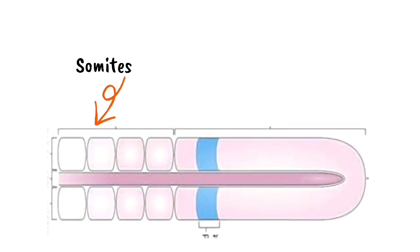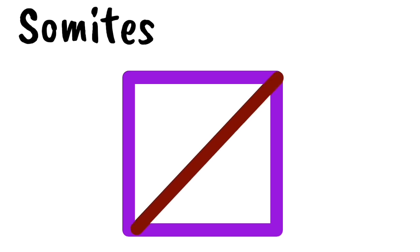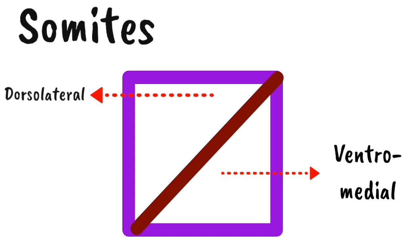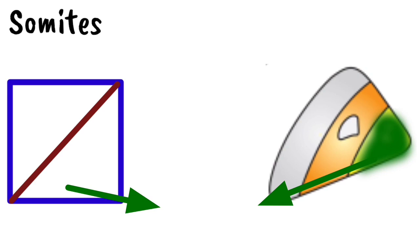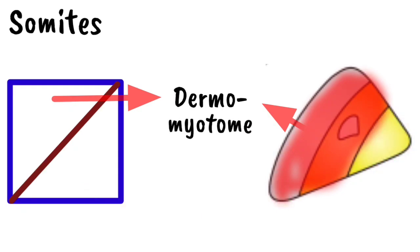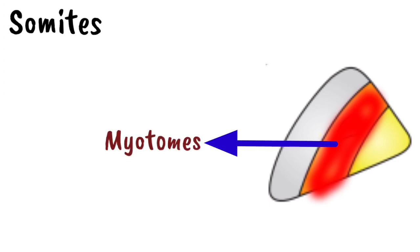A somite appears as a triangular structure with a cavity. For understanding, we can consider a somite as a square divided by a diagonal from top-right to bottom-left, giving two triangles: the upper dorsolateral portion and the lower ventromedial portion. The ventromedial portion is called the sclerotome and the dorsolateral portion is called the dermomyotome, whose medial part gives rise to the myotome and lateral part to the dermatome.